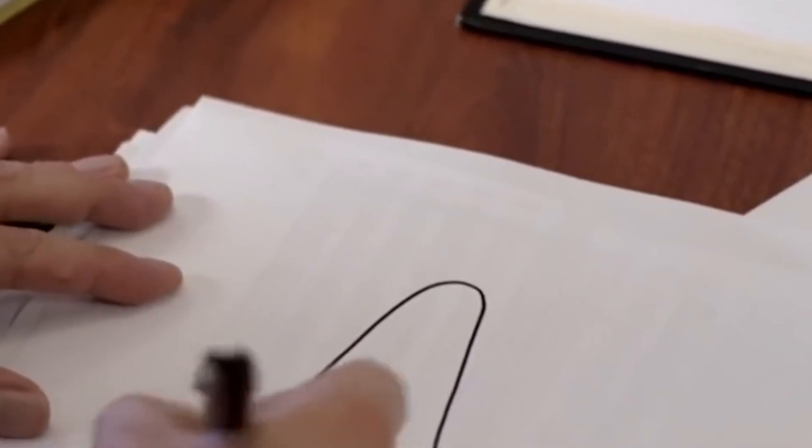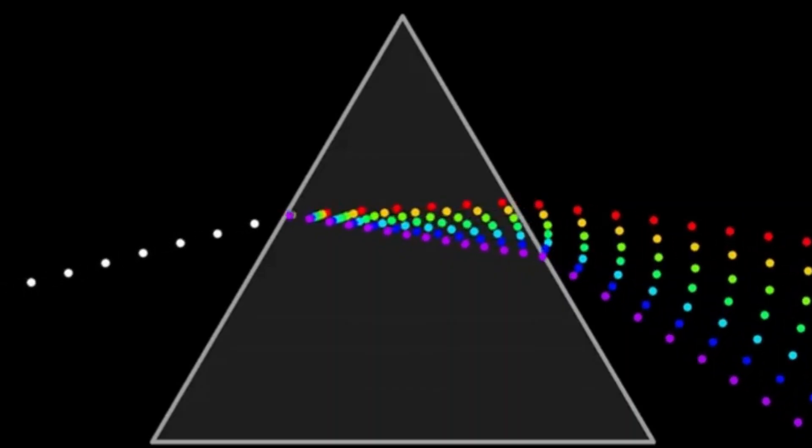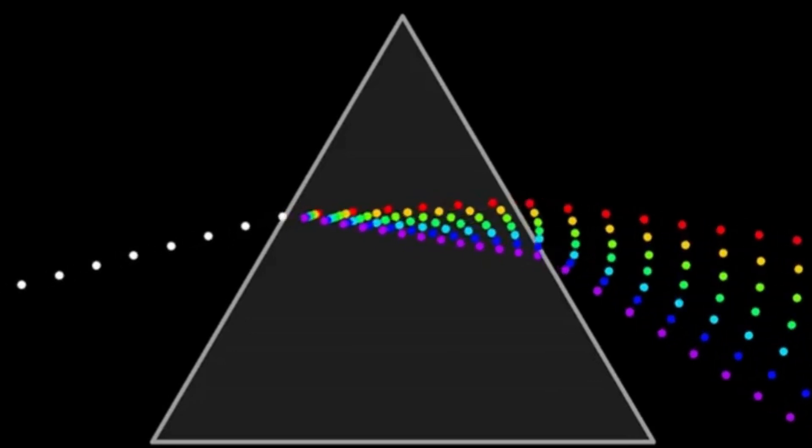So, the mystery was solved. Light was a wave, and not a particle. Except, there is more to this experiment than meets the eye.